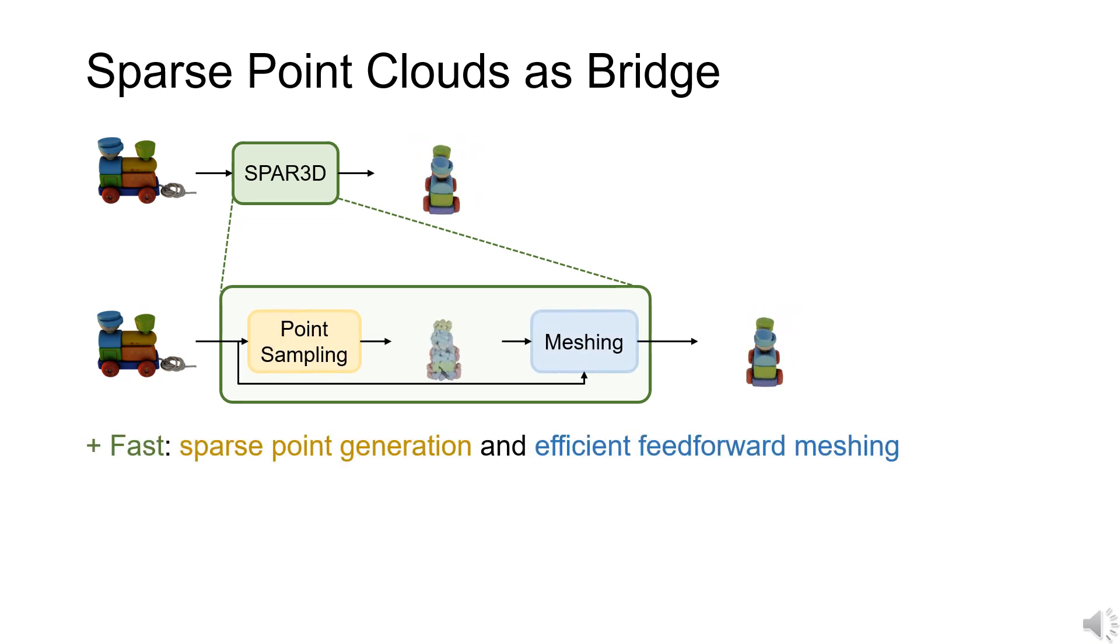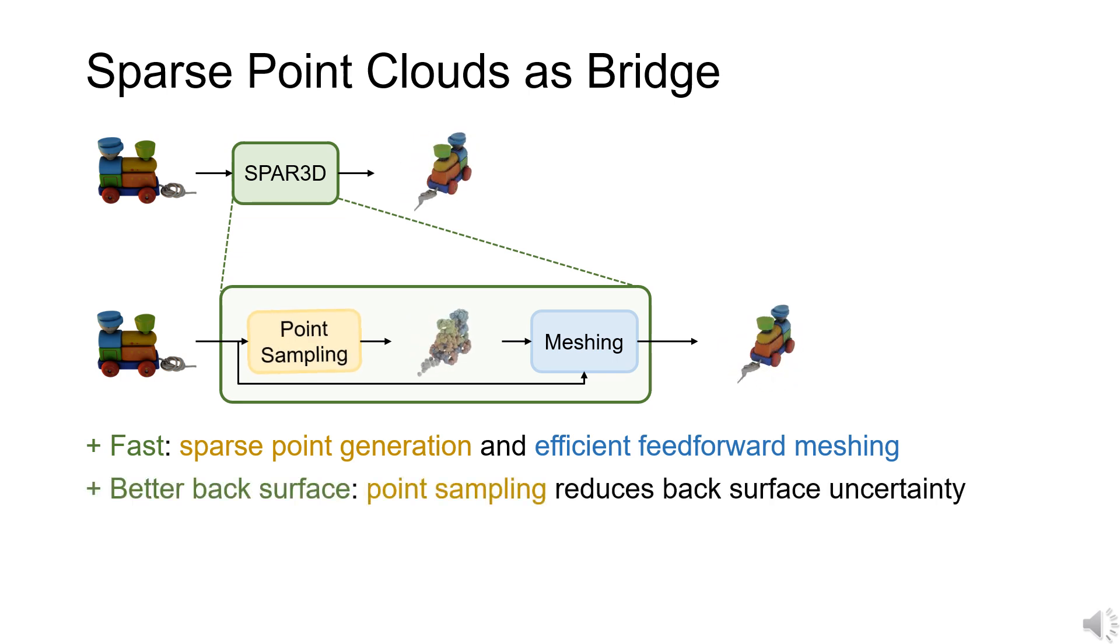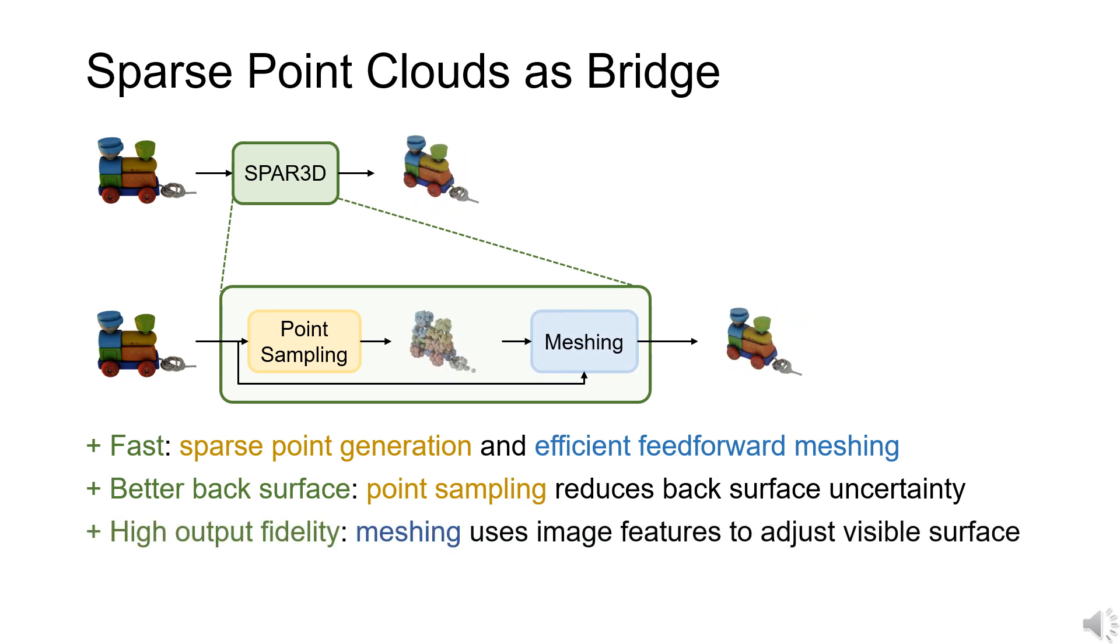SPAR3D enjoys fast reconstruction speed given the sparsity of the point clouds and the efficiency of our feedforward meshing model. The point sampling drastically reduces reconstruction ambiguity and leads to better back surfaces. Our regression-based meshing stage enhances the output fidelity using local image features.